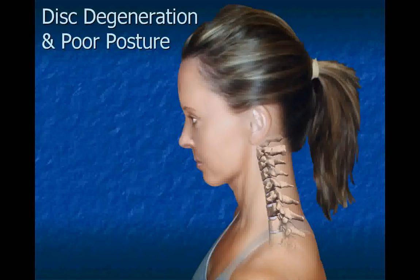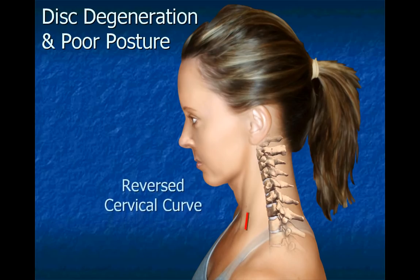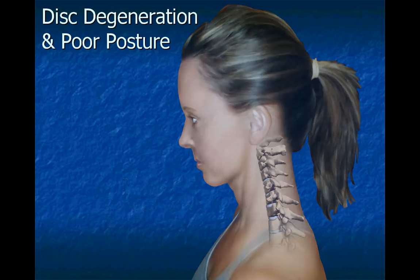Most cases of disc degeneration involve poor posture of the head and upper torso. When the head is protruded forward in front of the body, it often results in the cervical spine developing a reversed curve posture.